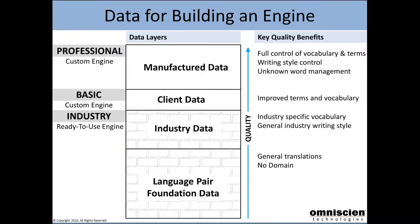To clarify how these engines are built and the difference in quality: we start with what we call language pair foundation data. On top of that we add industry-specific data, such as life science or IT or various other domains — that's where we base our industry engines. We then add client data to create a basic engine. We don't do any data manufacturing at a basic level. But once you move to a professional engine, you get manufactured data — often many hundreds of times bigger than the data you provide — which is key to give you full control of vocabulary, terminology, and writing style.